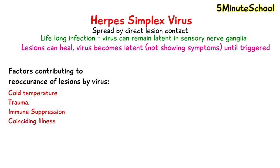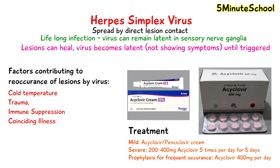Medication used to treat mild forms of the lesion can be topical aciclovir or penciclovir cream. If the infection is more severe, aciclovir is usually prescribed as an oral medication, with the dose ranging between 200 to 400 milligrams, five times a day for five days.